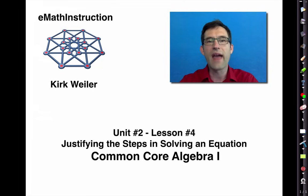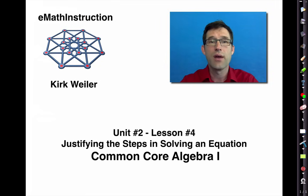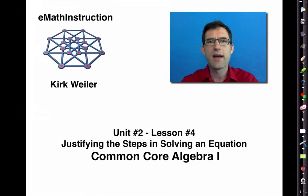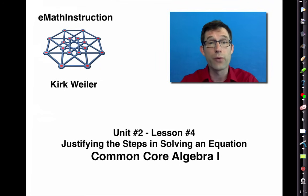Today we saw the additive property of equality and the multiplicative property of equality, and how we can combine these with the commutative, associative, and distributive properties to justify the steps in solving an equation. We also saw how solving can give strange results: no solutions when you get something like −10 = 2, or infinitely many solutions when you get something like 10 = 10.